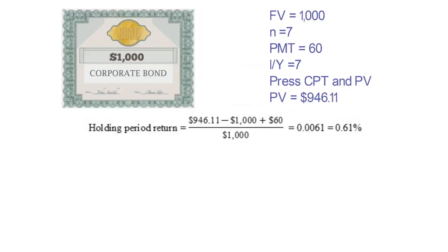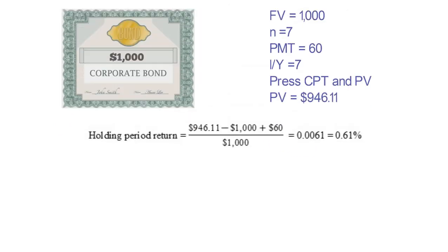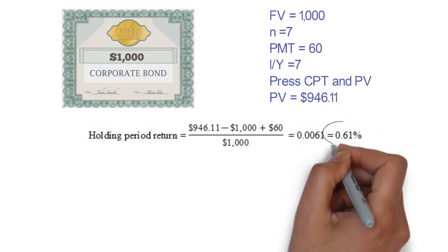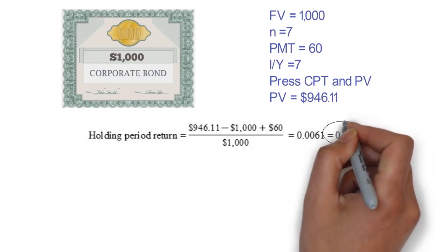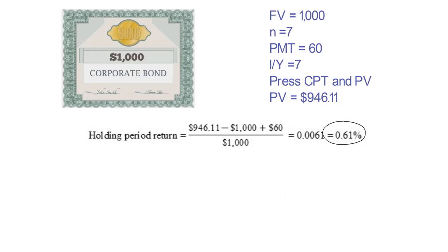Holding period return equals 946.11 minus 1,000 plus 60, divided by 1,000, and you get 0.61%. So the holding period return of your bond investment is 0.61%.